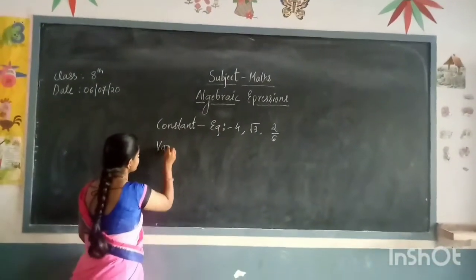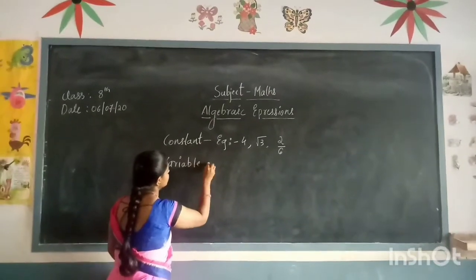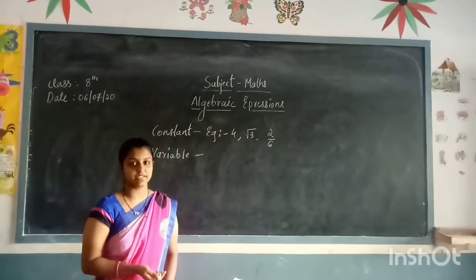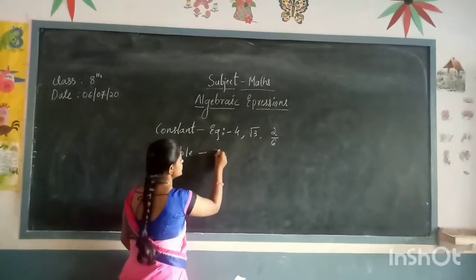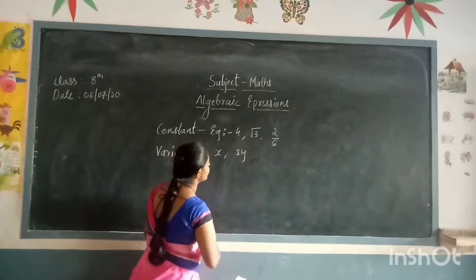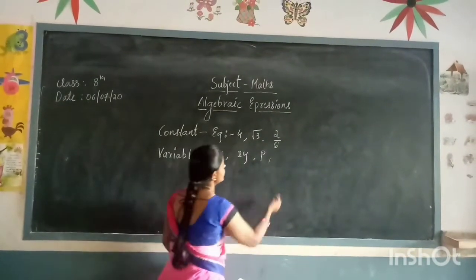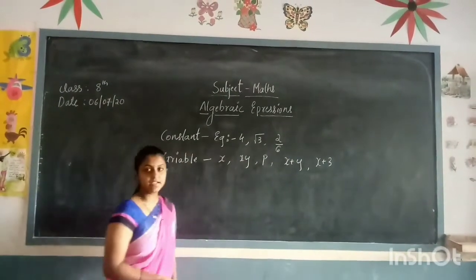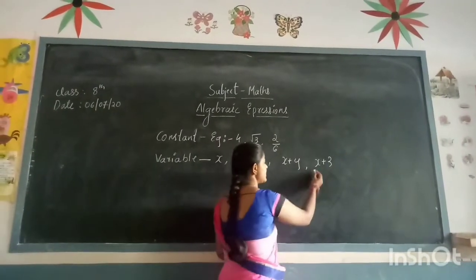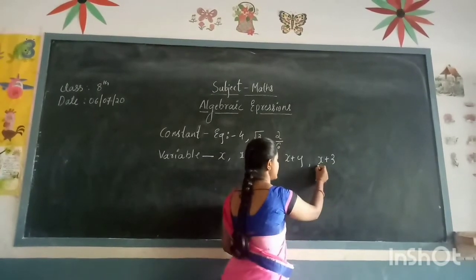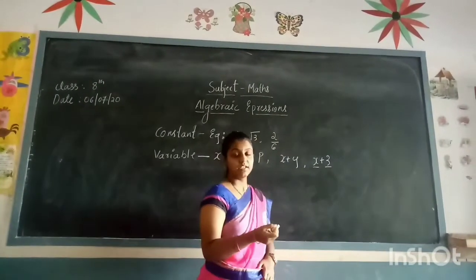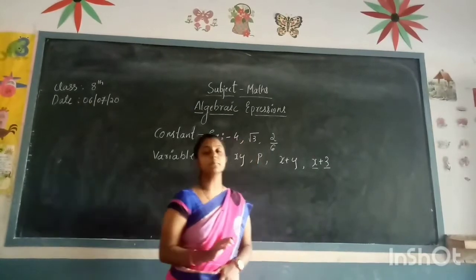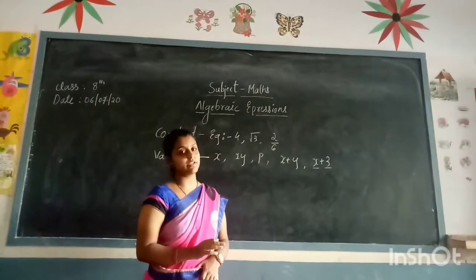Next, what is a variable? A variable is a quantity which does not have any fixed value, but some values can be assigned to it — that is called a variable. For example, x plus 3: here we have a variable and a constant. The combination of a variable and a constant also gives us a variable only. You should remember that.